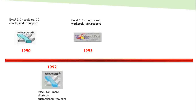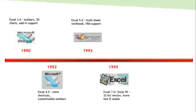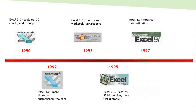In 1995, Excel 95 (version 7) came up and it could support the 32-bit version — it was faster and more stable than previous versions. In 1997, data validation was built into Excel.